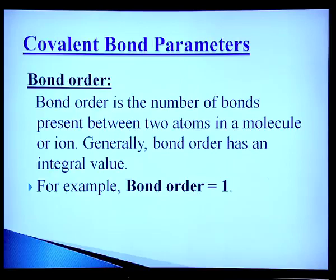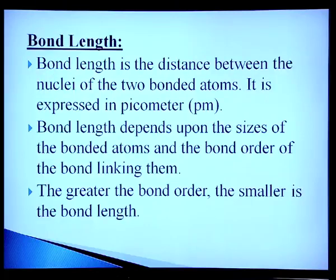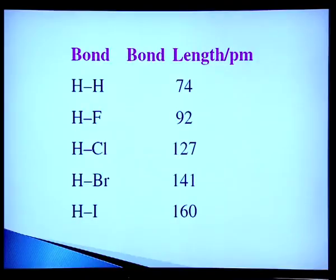Covalent parameters: Bond order is the number of bonds present between two atoms in a molecule or ion; it generally has an integer value. Bond order 1 (single/sigma bond): H₂, Cl₂, NH₃. Bond order 2: O₂, ethene. Bond order 3: acetylene or N₂. Bond length is the distance between nuclei of the two bonded atoms, expressed in picometers (pm). The greater the bond order, the smaller the bond length. Bond lengths for H–H, H–F, H–Cl, H–Br, H–I are 74, 92, 127, 141, and 160 pm respectively.